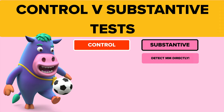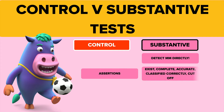With substantive tests, you detect misstatements directly at the assertion level. You go to each individual item and go through the assertions. So you go through sales, cost of sales, receivables, payables — at the assertion level. The assertions are: do these receivables actually exist? Are they complete? Are they accurate? Are they classified correctly — are they really receivables? And has the cutoff been done correctly — are these receivables in the right year? A substantive test tests all of those.